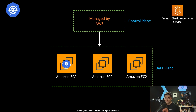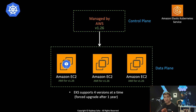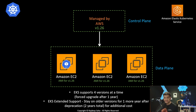When we talk about Kubernetes version or EKS version, your control plane is running, let's say, version 1.26. The data plane version refers to the Amazon EC2 AMIs built for specific EKS versions. EKS supports four versions at a time, so you get around one year to stay on one version, after which you may be forced to upgrade. However, there is a new feature called EKS Extended Support.